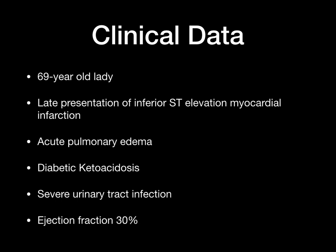This case is of a 69-year-old lady who presented to our hospital 36 hours after the onset of severe symptoms of chest pain, dyspnea, and vomiting. When she came, she was in acute pulmonary edema. Her blood pressure was 107 over 70. She had marked elevation of blood sugar and diabetic ketoacidosis. She also had low-grade fever and starting sepsis because of severe urinary tract infection.